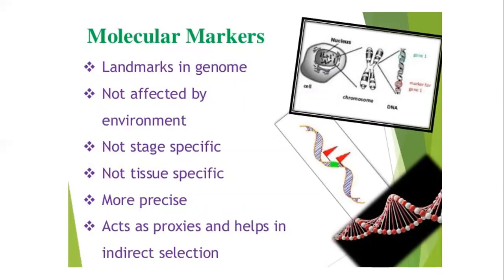Molecular markers are landmarks in the genome and are not affected by the environment. The genetic property of a gene can be altered by environmental effects or epigenetic modifications, but no such problems affect molecular markers. Molecular markers can easily be identified; they are not stage-specific or tissue-specific. In all tissues the markers are the same because they are often situated in the non-transcribing portion of the genome, acting as proxies for indirect gene selection.